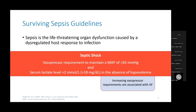Moving on to sepsis — as all patients in this study have septic shock — the Surviving Sepsis Guidelines define sepsis as a life-threatening organ dysfunction caused by a dysregulated host response to infection. Septic shock is a subset defined by profound circulatory or cellular abnormalities associated with increased risk of mortality. Clinically, these patients require a vasopressor to maintain MAPs of 65 or greater and have a serum lactate greater than 2 in the absence of hypovolemia. Of note, while sepsis can be a precipitating factor for AFib, increasing vasopressor use is also associated with new-onset AFib.